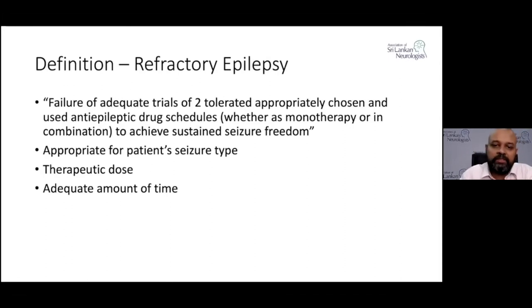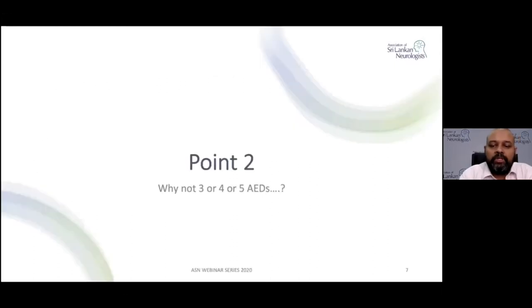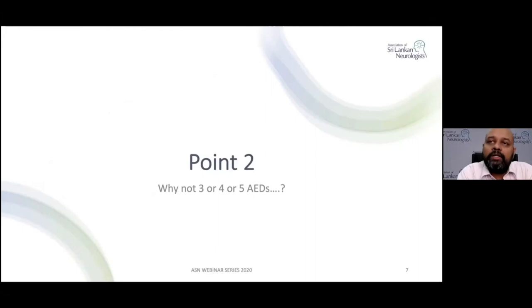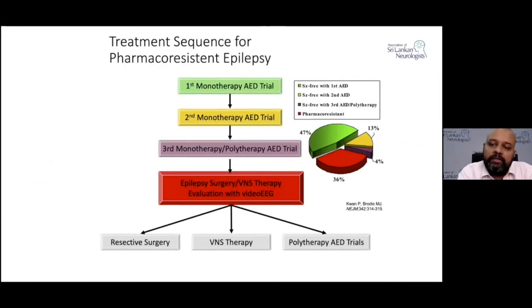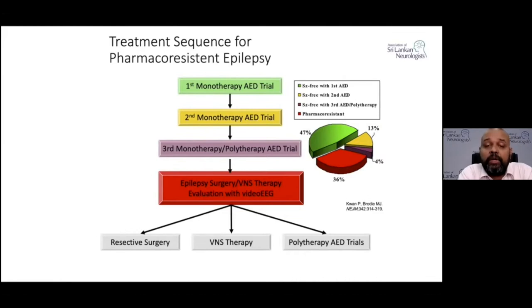The first pearl is the definition of refractory epilepsy. Moving to the second point: why two antiepileptic drugs, and not three, four, or five? To answer that question, this is actually the landmark study done around the year 2000 by Kwan and Brody, and it is based on this paper that we consider patients to have pharmacoresistant epilepsy.